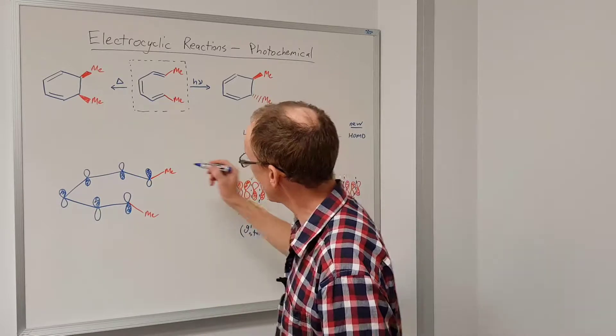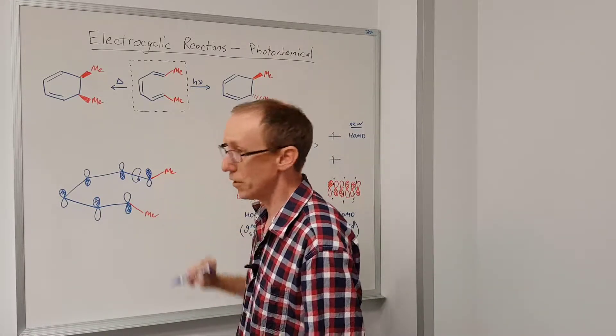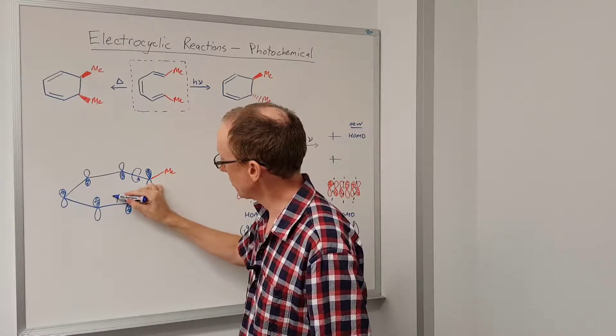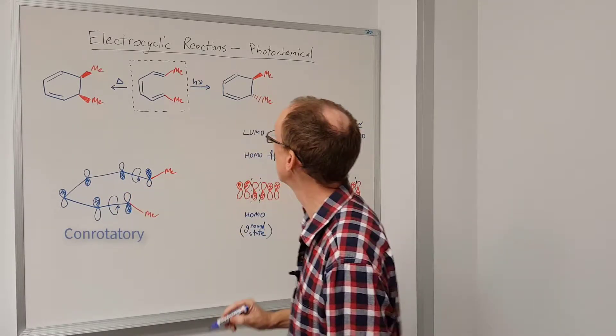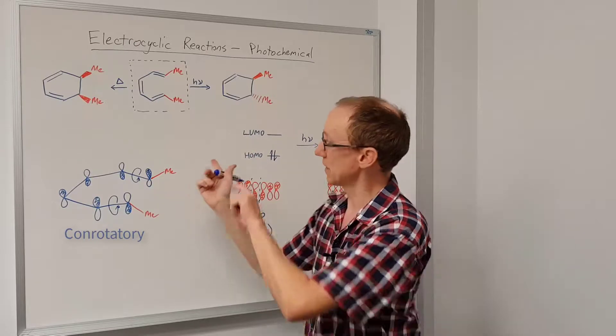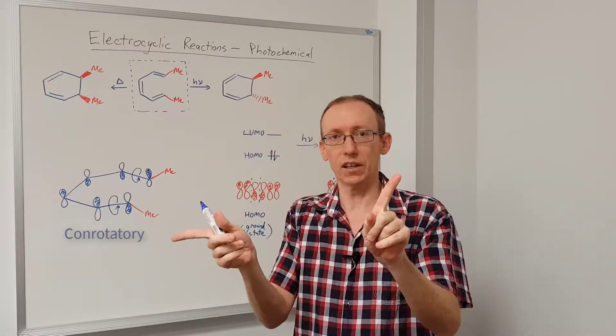Okay. So we're going to get rotation around this bond in one direction, and then this bond is going to rotate around in the same direction. This is known as a conrotatory process. And that's how we're going to get these two methyl groups to be on opposite sides of the ring.